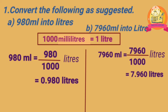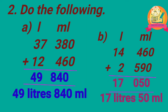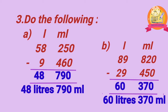Second problem: do the following additions. Problem A: add 37 liters 380 milliliters to 12 liters 460 milliliters. After adding, we get 49 liters 840 milliliters. Problem B: add 14 liters 460 milliliters to 2 liters 590 milliliters. After adding, we get 17 liters 50 milliliters.